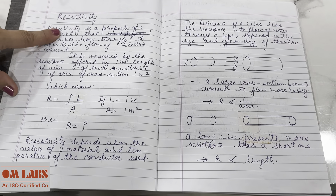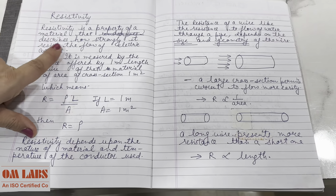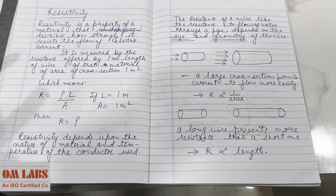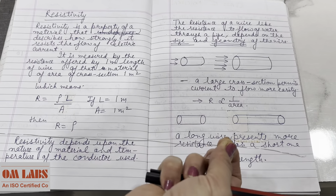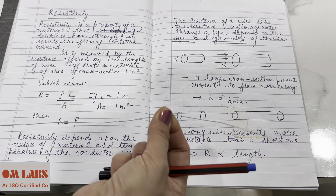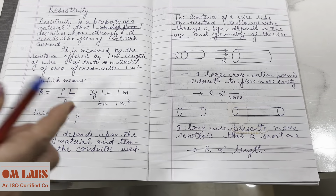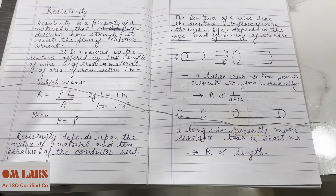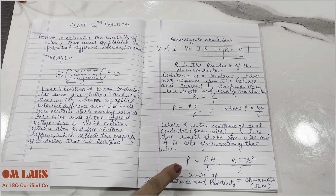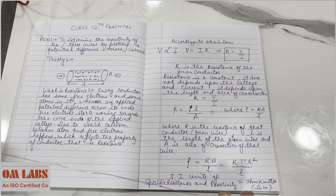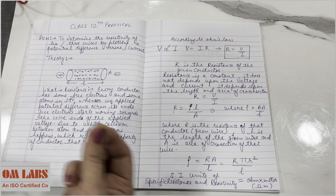The definition of resistivity is: it is a property of a material that describes how strongly it resists the flow of electric current. Resistivity of any conductor or wire tells us how strongly it opposes the electric current whenever we pass electric current through it. Resistivity depends on the material (chemical composition) and the temperature of the conductor.